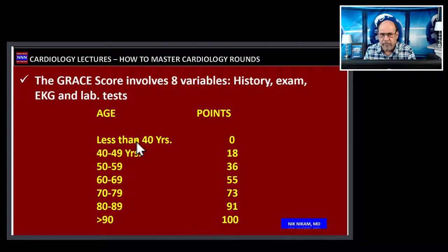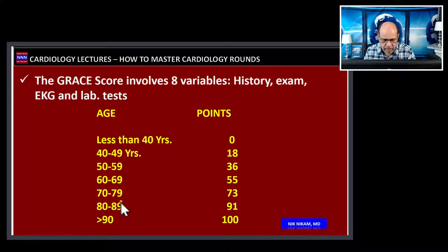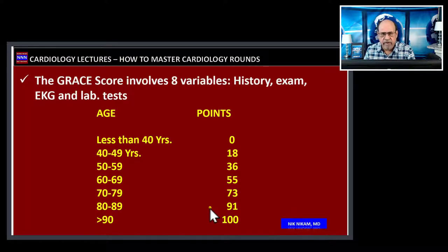You can pause the video and look at the scoring table. For age: if less than 40, there are zero points; between 60 and 69, there are 55 points; and between 80 and 89, there are 91 points. The points go up dramatically with age, which is consistent with the higher risk of cardiovascular morbidity and mortality among those greater than age 60.